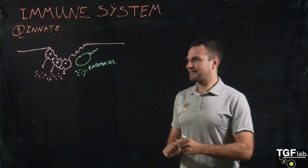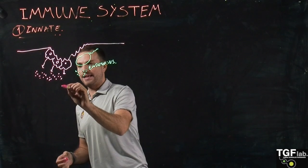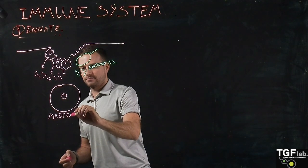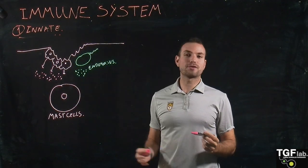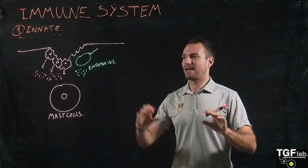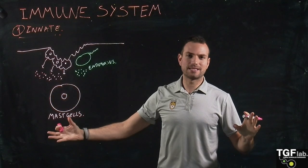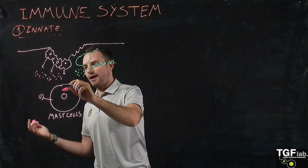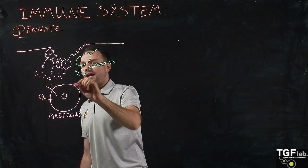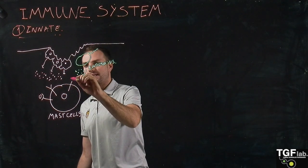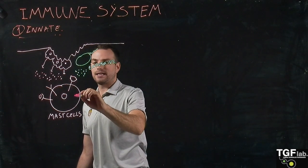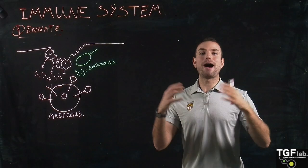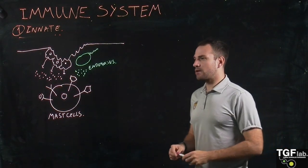These cells are called the mast cells. Their main characteristic is that they have many different receptors that can recognize a lot of different types of stimuli and chemical messengers. We have receptors that can recognize debris from the broken cells, receptors that can recognize cytokines, and receptors that can recognize endotoxins — many different types of receptors detecting a wide range of chemical messengers.